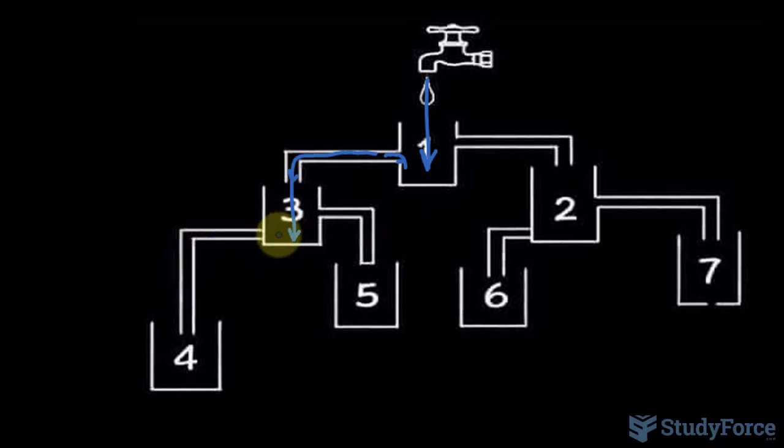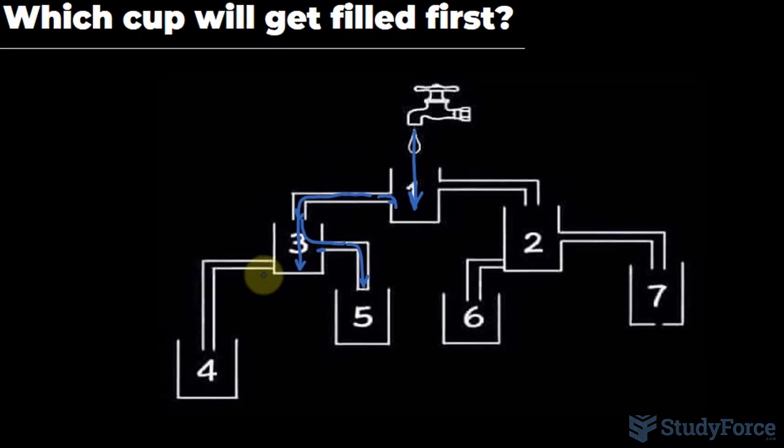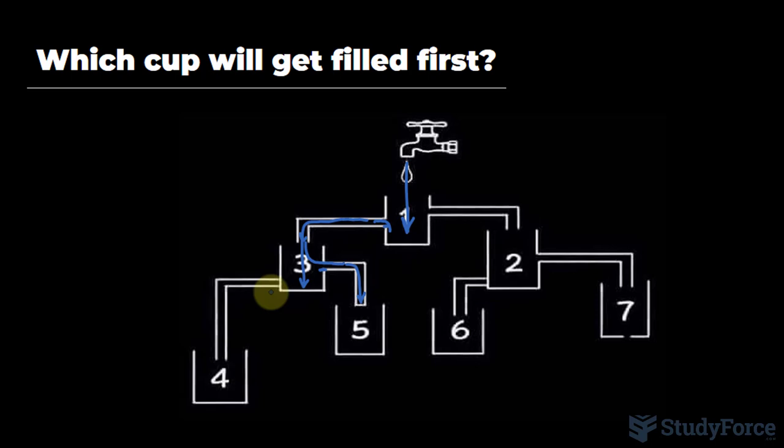Okay, so as that water flows into three, it fills up up until this point right here and it starts to flow into this pipe except that it's also closed right there. What this means for us is that all of cup three will fill up before any of the other cups, even before one.